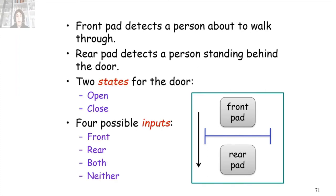We have four possible inputs: someone standing in the front pad, someone standing in the rear pad, two people — one in the front pad and one in the rear pad — and nobody standing anywhere. We also have two states for the door: open and closed. So let's use a Finite State Automaton to model all possible combinations of states and inputs.